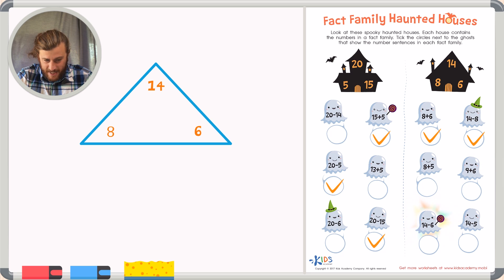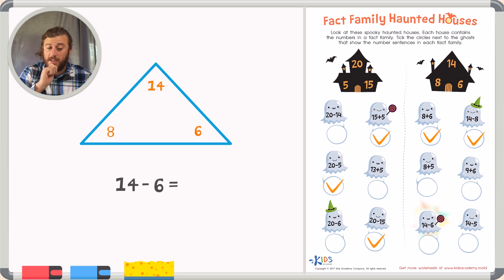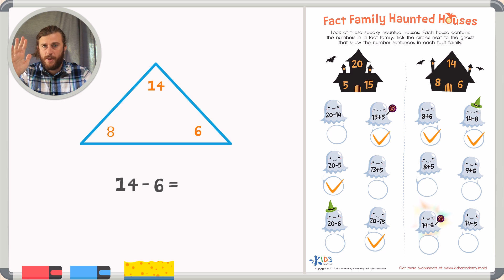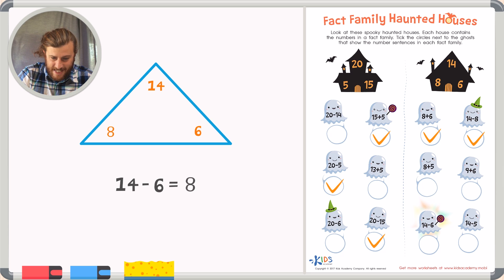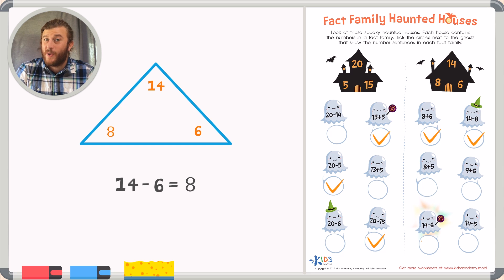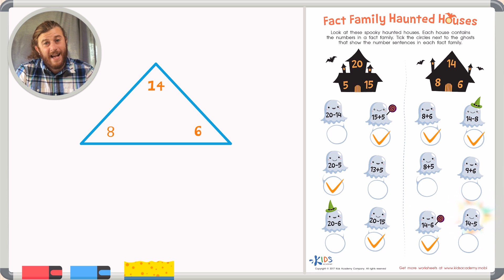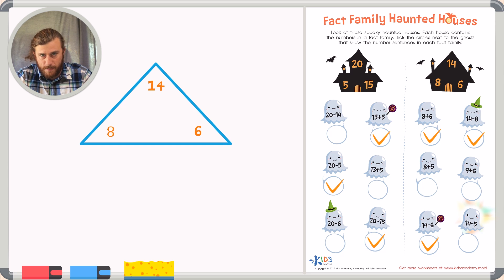Moving along, we have 14 minus 6. These are two numbers in our fact family, but let's subtract just to make sure they equal 8. Counting up: 6, 7, 8, 9, 10, 11, 12, 13, 14 — so 14 minus 6 is 8. Those are the three numbers represented in our fact family, so this is correct. And lastly, we have 14 minus 5. The number 5 does not belong in our fact family, so we know this is not correct.